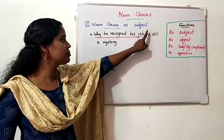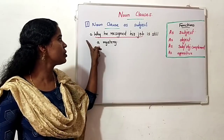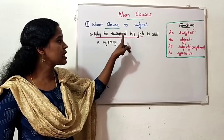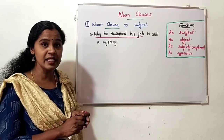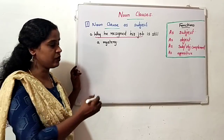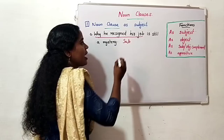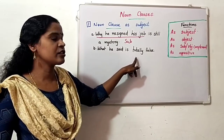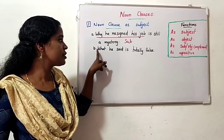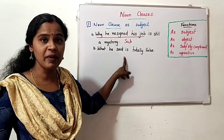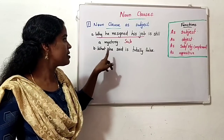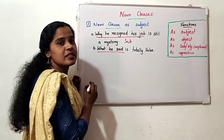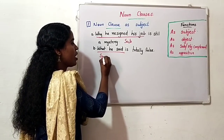It is a collection of words with subject and verb and doesn't have a complete meaning on its own. At the same time, it acts as the subject of the whole sentence. Another example: 'What he said is totally false.' Here 'what he said' is the subject — it is a noun clause with 'he' as subject and 'said' as verb.